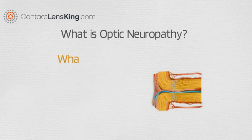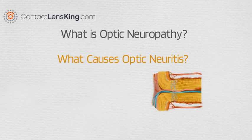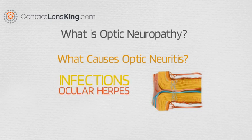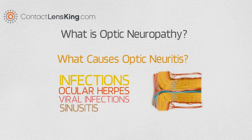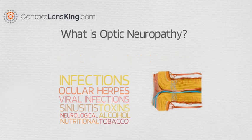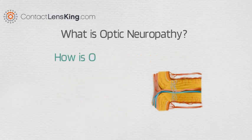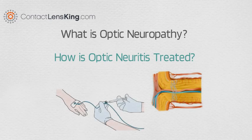What causes optic neuritis? Some causes may include infections, ocular herpes, other viral infections, sinusitis, neurological disorders, nutritional deficiency, and toxins such as alcohol and tobacco.